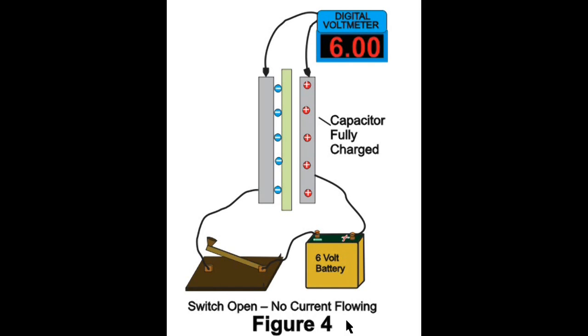Figure 4 is probably the most interesting of the five figures we are showing today. Here the switch is open, which is basically the same thing as taking the battery out of the circuit. And yet, the voltmeter shows six volts. You might ask, what is going on? This feature of capacitors that can actually store electrical energy is a feature that makes it so useful.